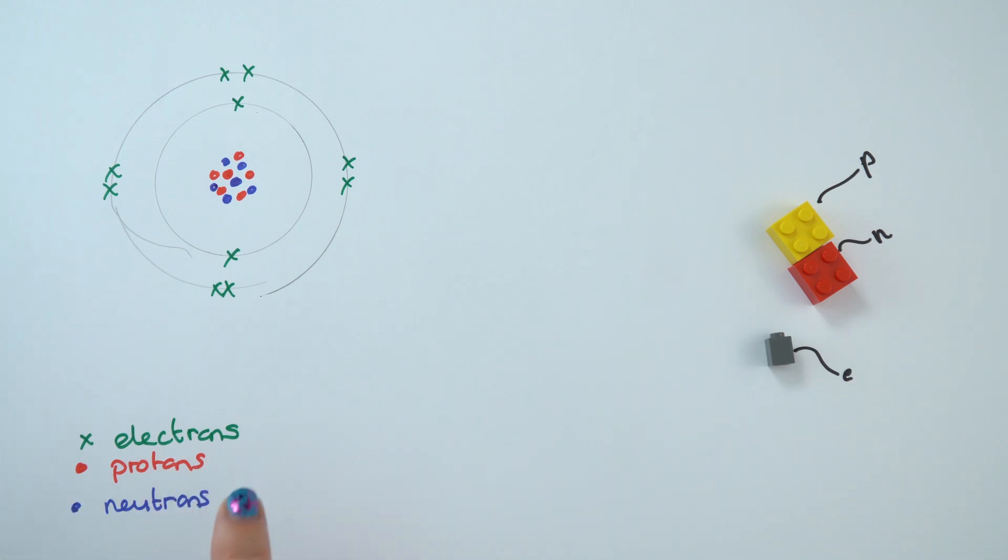An element will always want to have a full outer shell. So this element will always want to have eight electrons on the outside. Which means if it's a group seven element and has seven electrons on the outer shell, it will always try and bond with something so that it gains that extra electron.